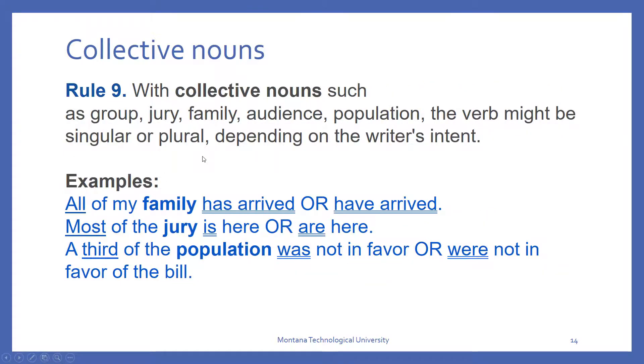When we have a collective noun, and here are some examples of them: group, jury, family, audience, population, you have to determine what your intent is when you write the sentence. It may be singular or plural. So, all of my family has arrived, or all of my family have arrived, depending on whether you want to refer to the units of the collective noun as singular or plural. Most of the jury is or are, a third of the population was or were not in favor of the bill.